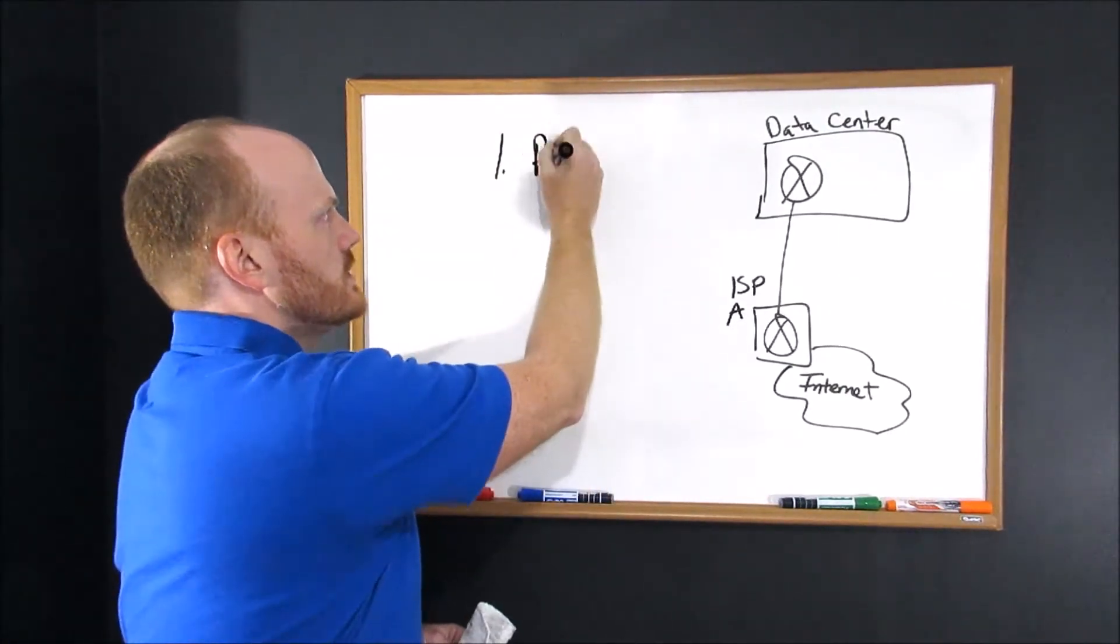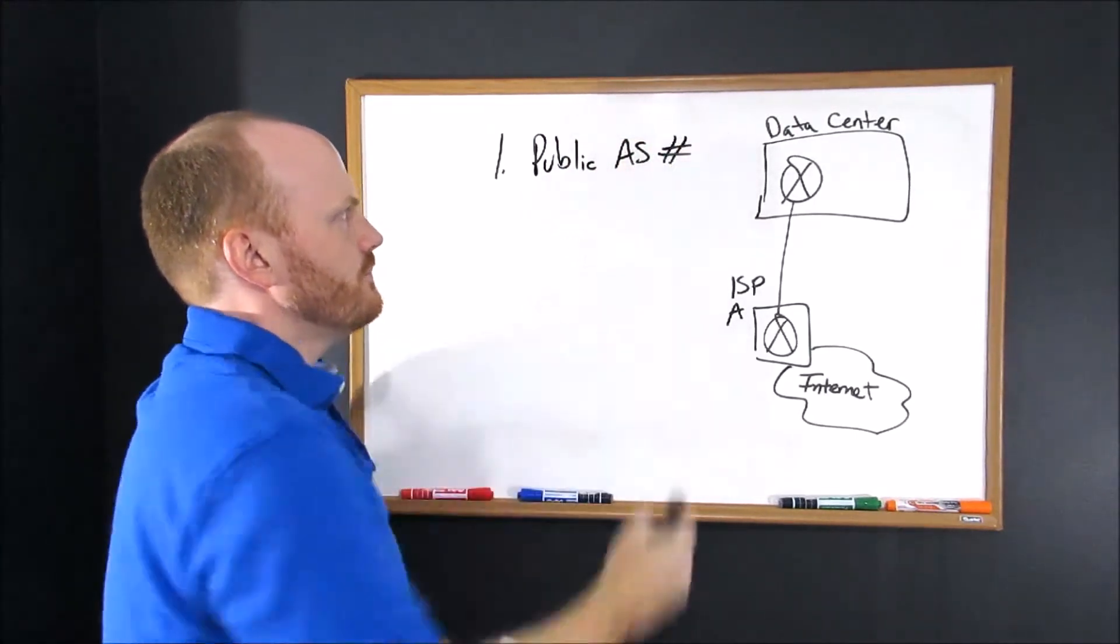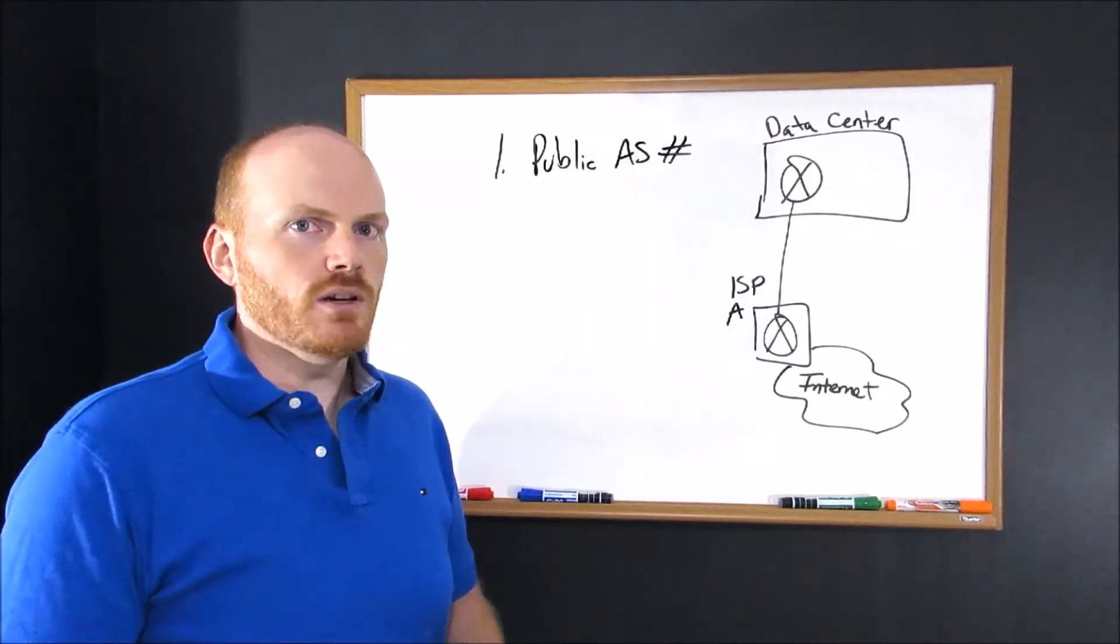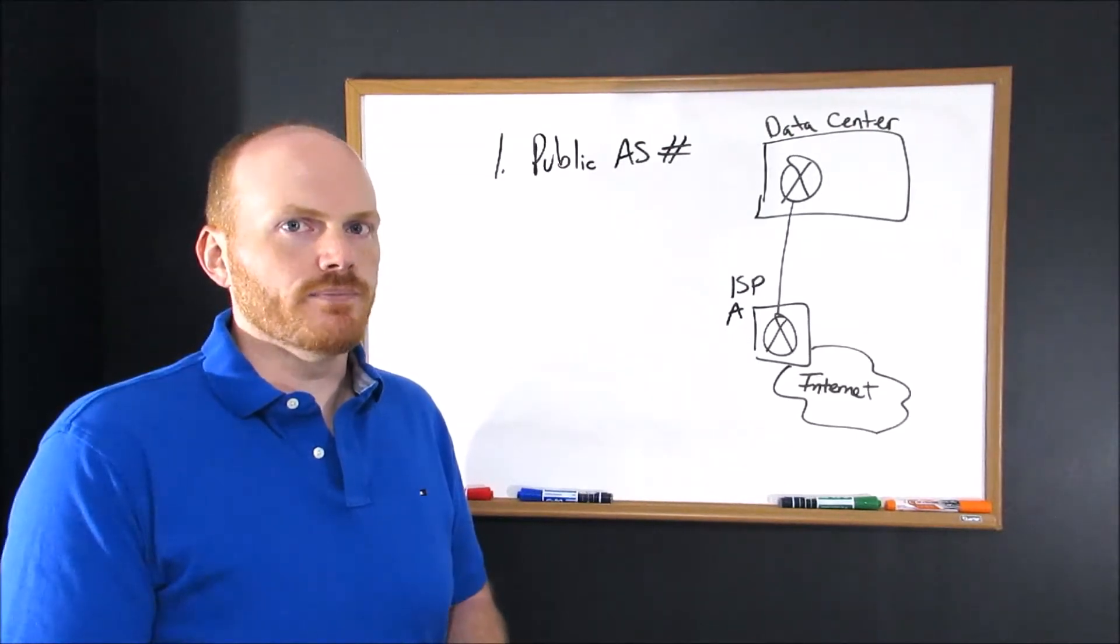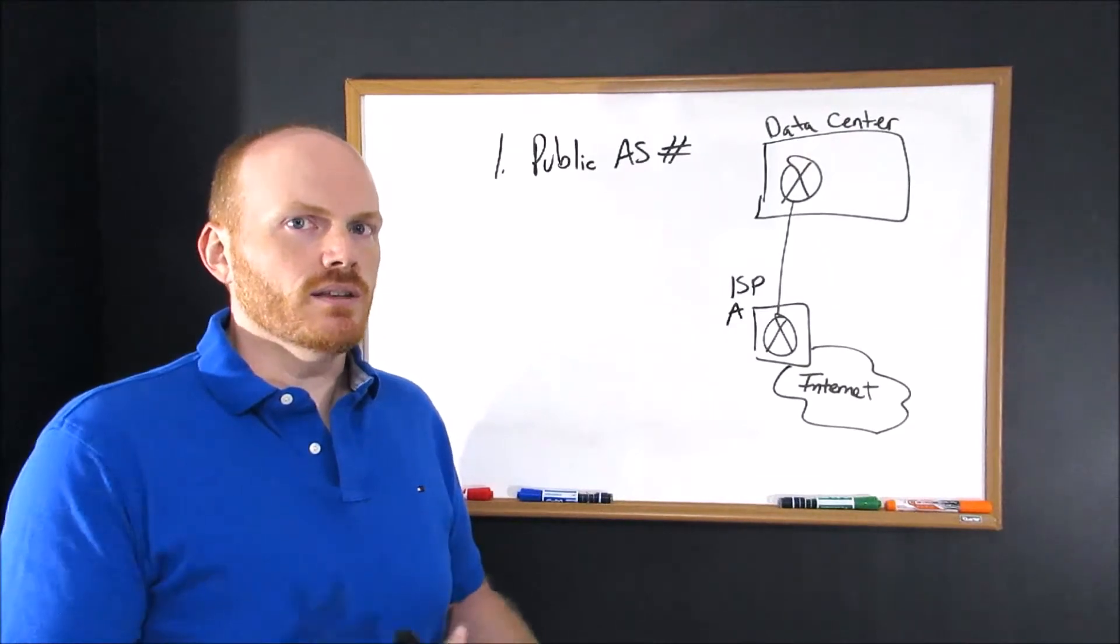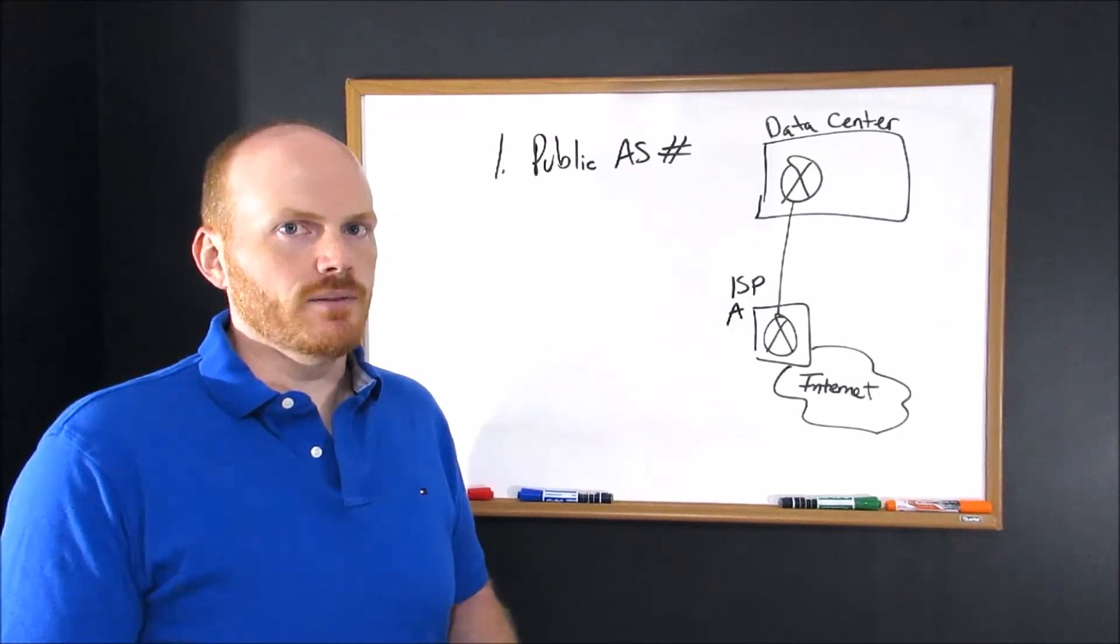First, you're going to need to get yourself your own public AS number. I have a link below to ARIN, an organization where you can purchase a public AS number. You fill out a form, you pay a fee, and they'll issue you an AS number. It's very similar to buying a domain name.